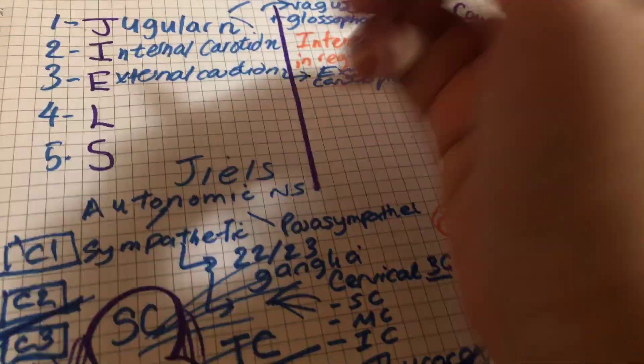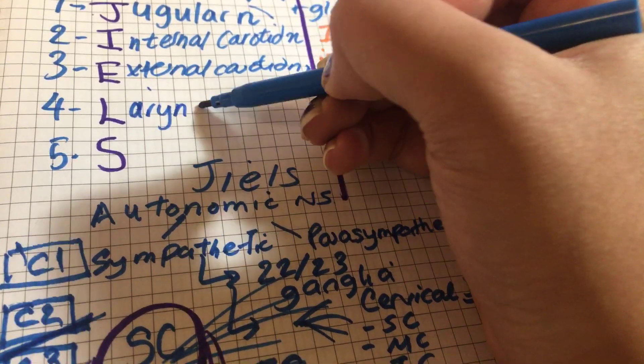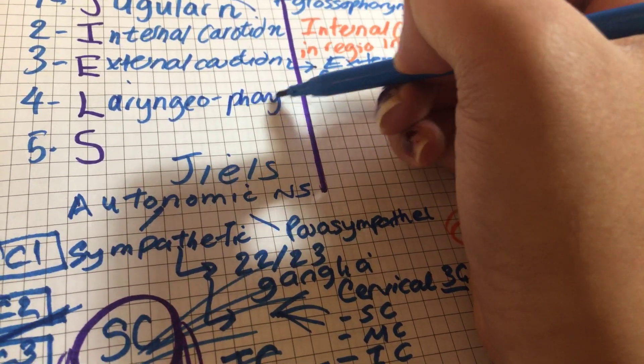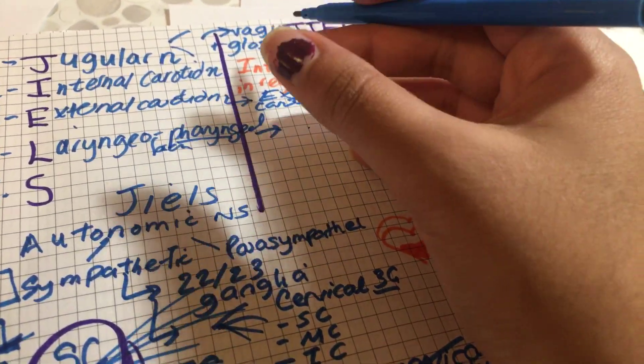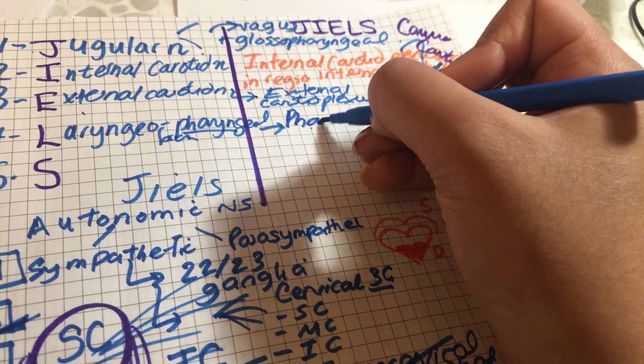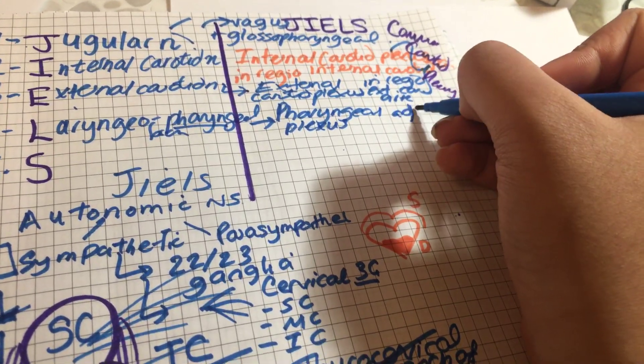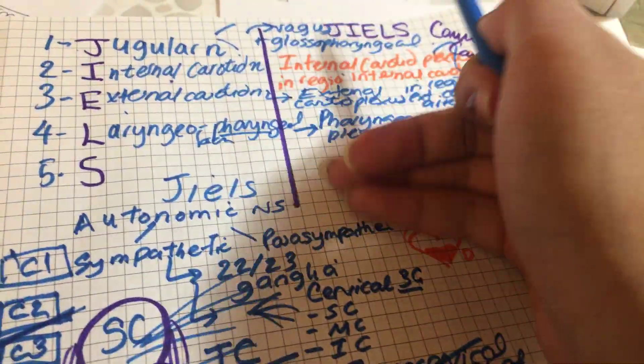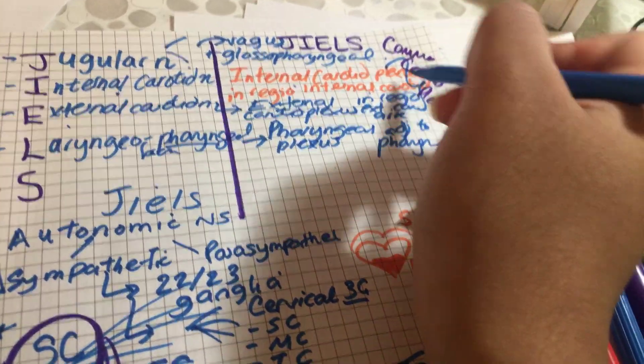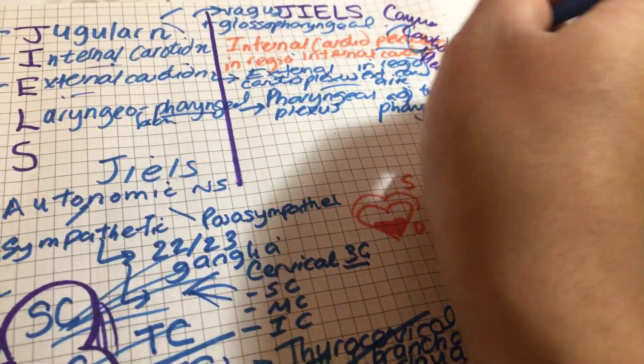Next, you have your laryngopharyngeal branches, forming the pharyngeal plexus in the region adjacent to the pharynx. These are just completely related. All of the words are the same. You just have to add either a plexus: internal carotid plexus, internal carotid nerve; external carotid nerve, external carotid plexus; internal carotid artery, external carotid artery.